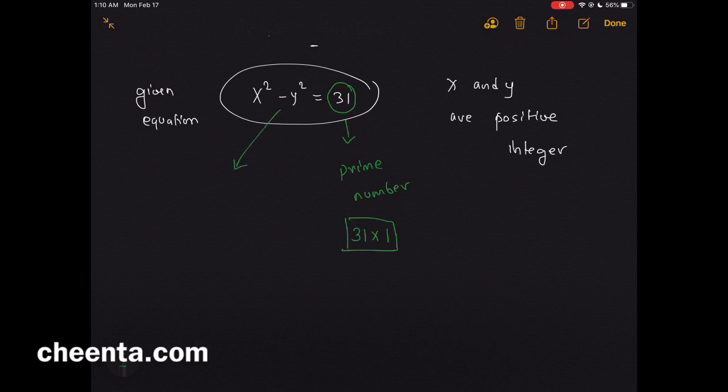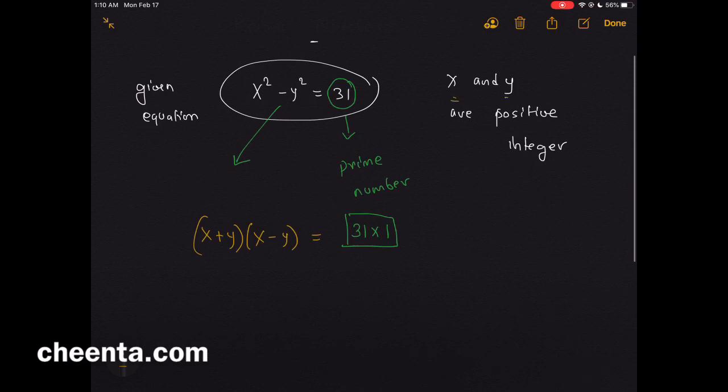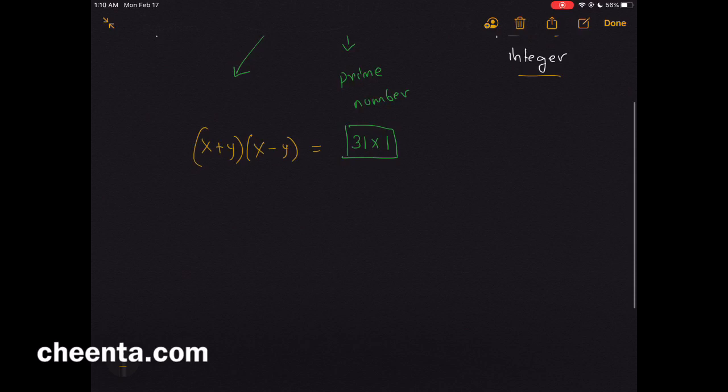Now if you take x² - y², you can factorize that as (x + y)(x - y). It's given that x and y are both positive integers, so x + y must be the larger one. So we will set x + y = 31, and x - y must be the smaller one.